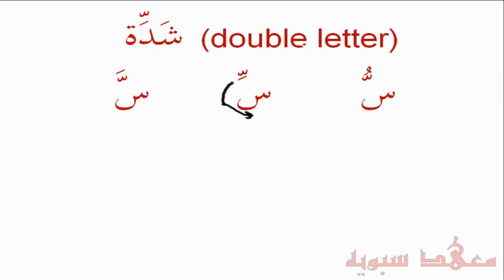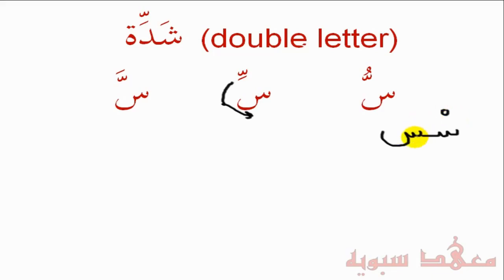Now let's dissect the Shaddah on top of these letters. The Shaddah represents a doubling of the letter — so there are two Seens because the Shaddah is there: one Seen followed by another Seen. The first Seen will always have a Sukun, and then the second Seen will have the actual Harakah. A word cannot start with a Sukun, so let's put the Ra before it for example.